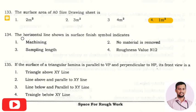The next question is: the horizontal line shown in the surface finish symbol indicates? The right answer is option one, machining.